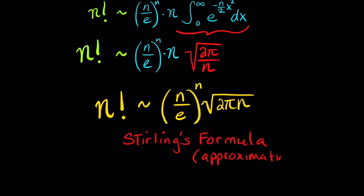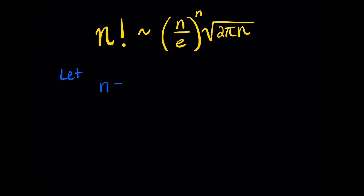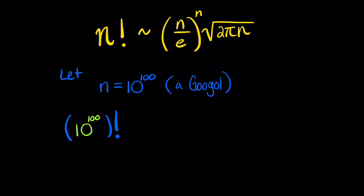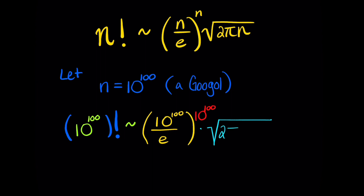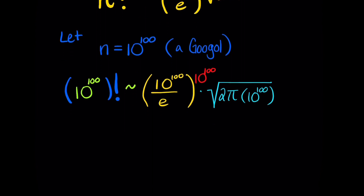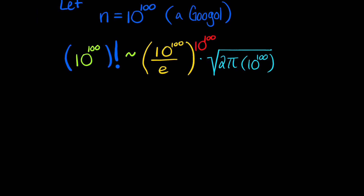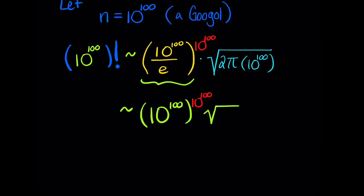Stirling's formula works much better as n gets very large, so it will do the trick. We want to approximate a googol factorial, so we let n equal 10 to the 100th power. Substituting into the formula, a googol factorial is approximately equal to a googol divided by e, raised to the googol power, multiplied by the square root of 2 pi times a googol. Since a googol divided by e is essentially still a googol, we have a googol raised to the googol power times the square root of 2 pi times a googol.